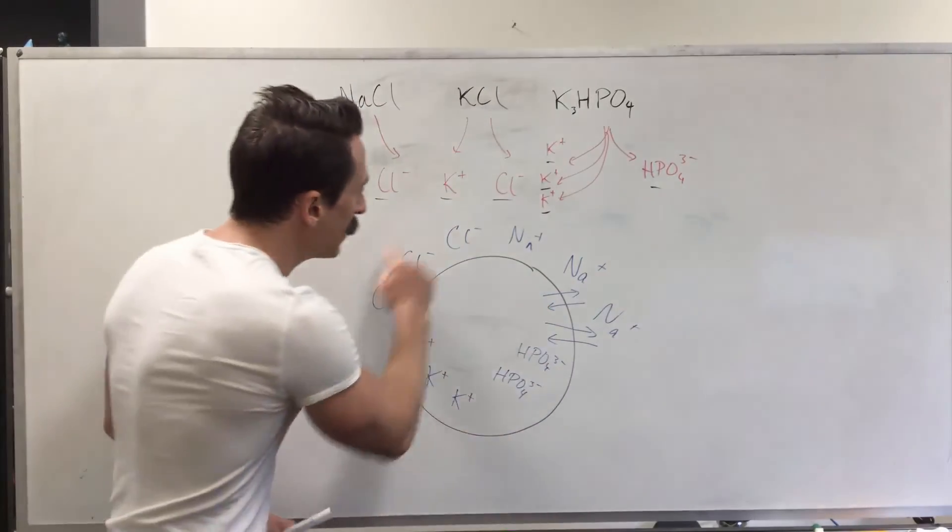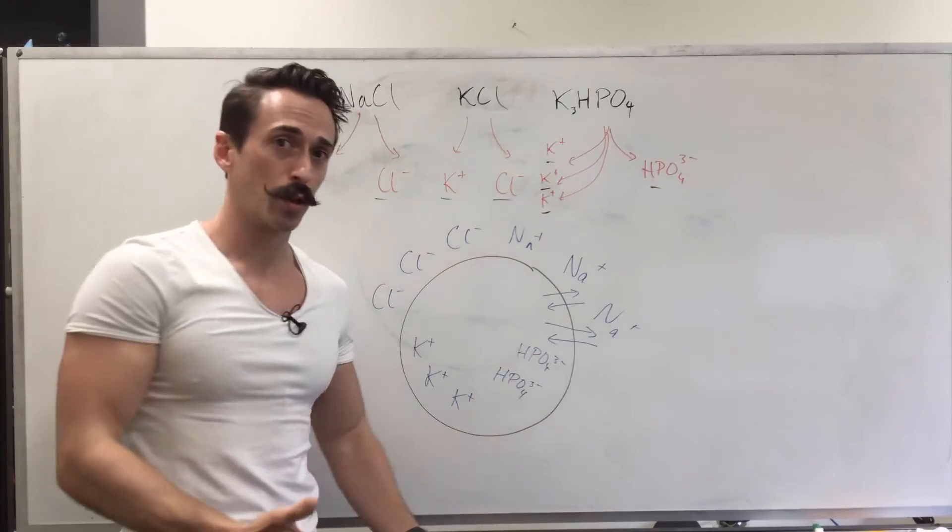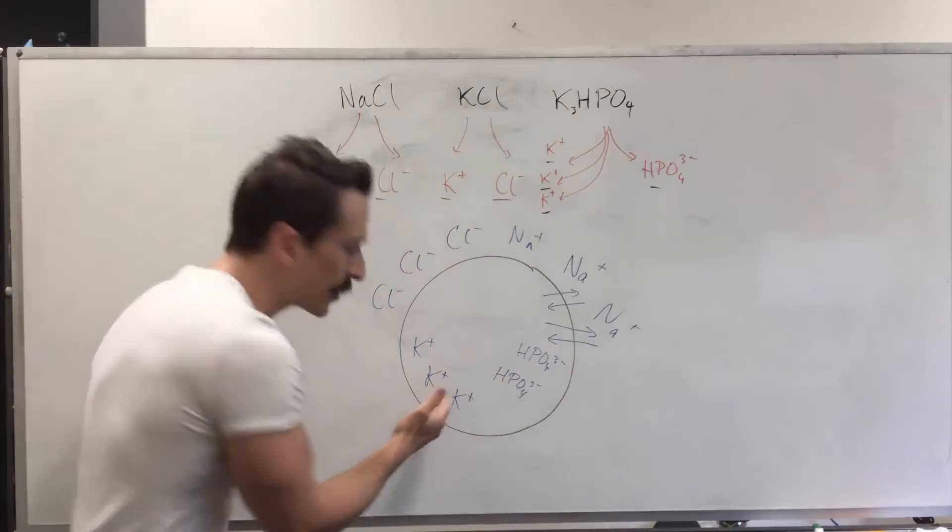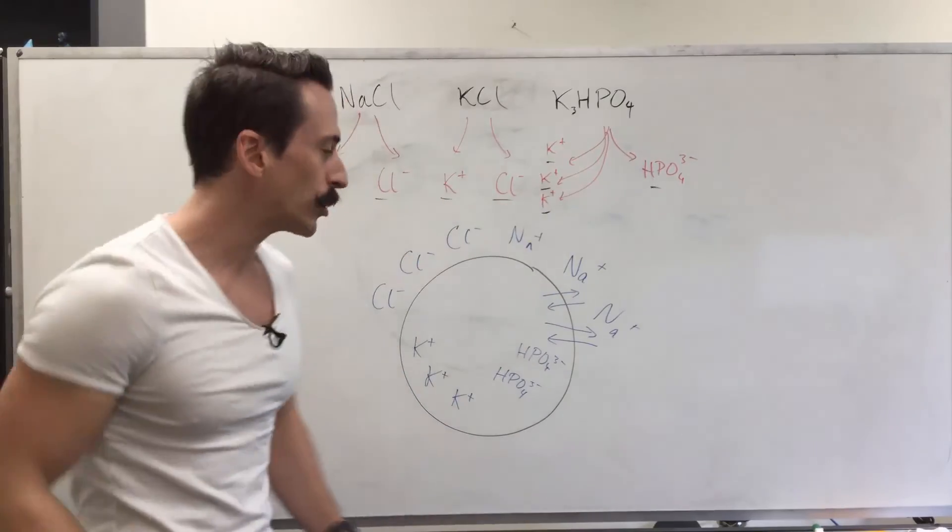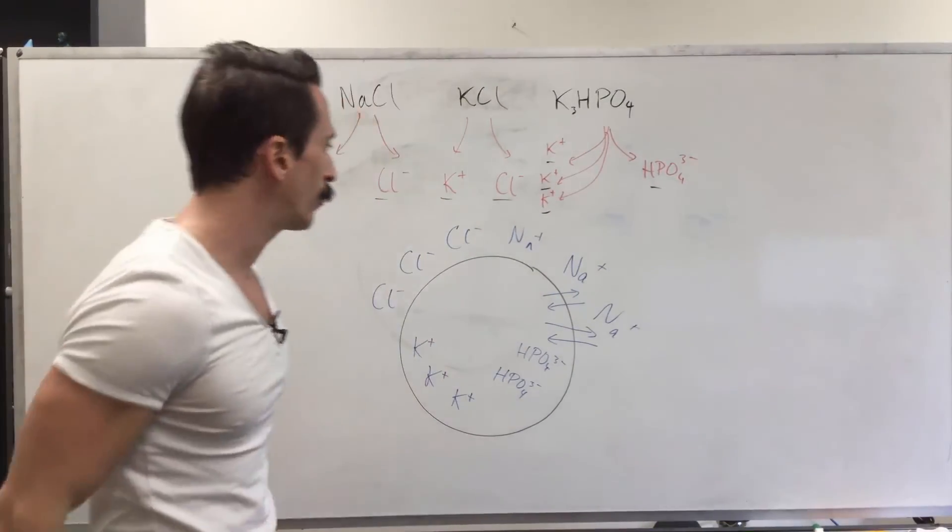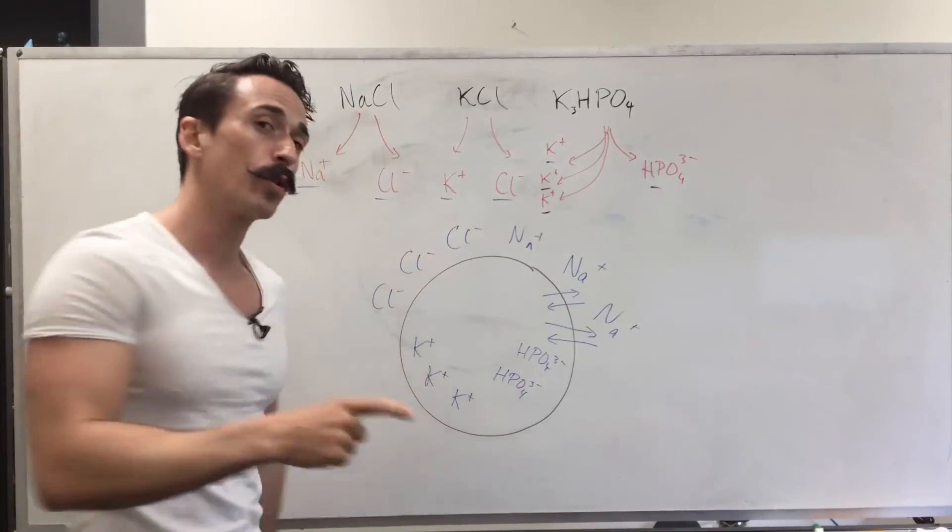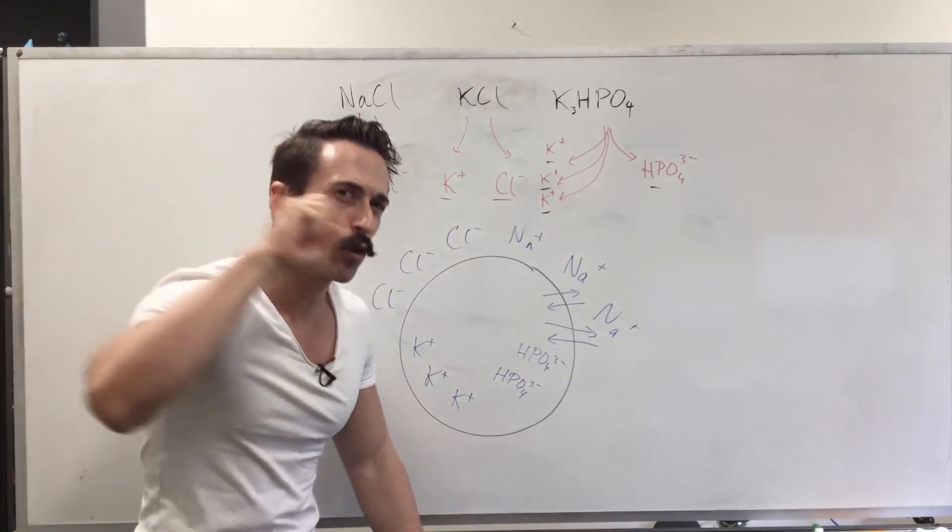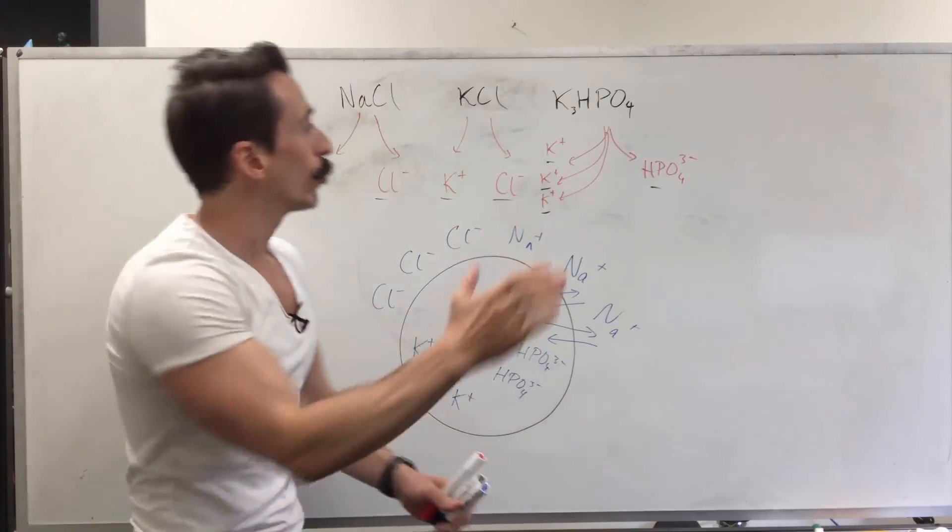But in addition to that, these ions are important in other physiological processes. Sodium and potassium are important for neurons to send their signals called action potentials. Phosphate is important for bone, teeth, and energy production. And chloride is also important for neurons to send neurotransmitters. So this is the importance of electrolytes.